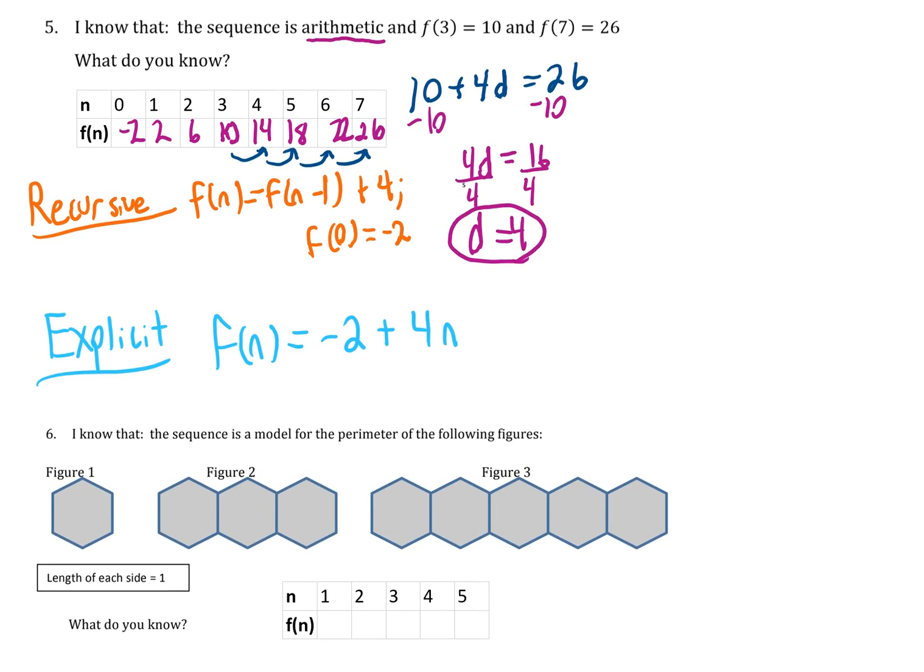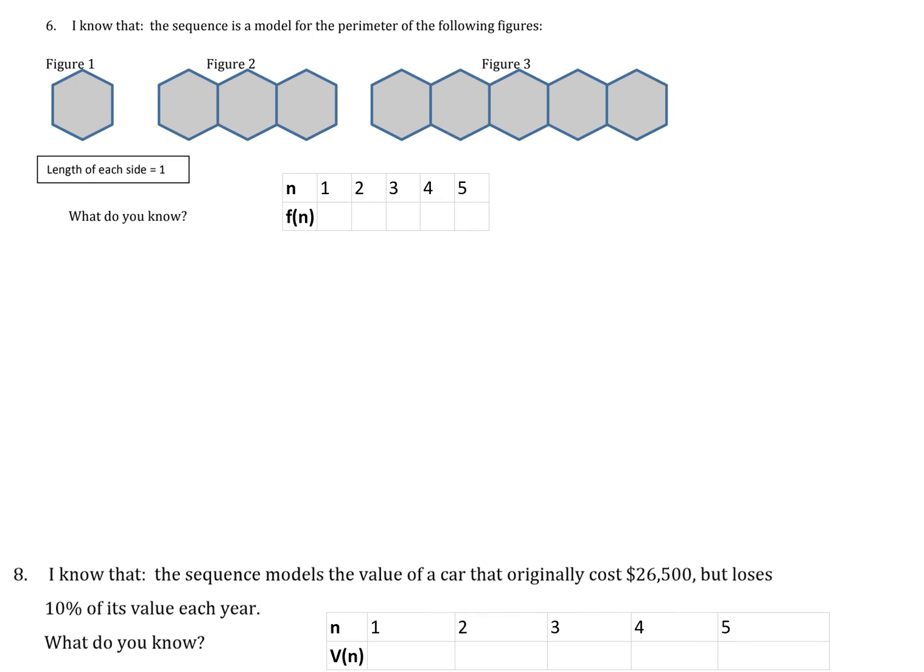Number 6, we have a series of figures and we want to model the perimeter. It's a hexagon, so the perimeter of the first hexagon is just going to be 6 because each side length is 1. From there, I take the hexagon that I have and I'm adding on 1, 2, 3, 4, 5, 6, 7, 8, 9, 10 more sides, so that's going to be 16. Then I do the same thing, so it's going to be 26, 36, and 46.